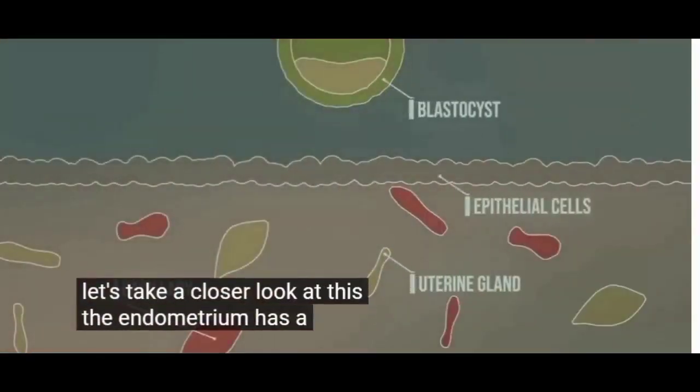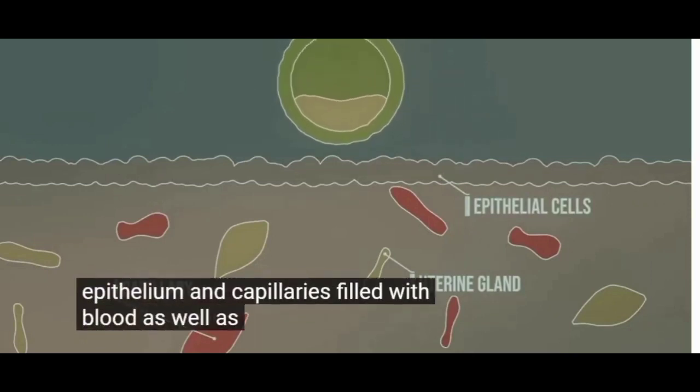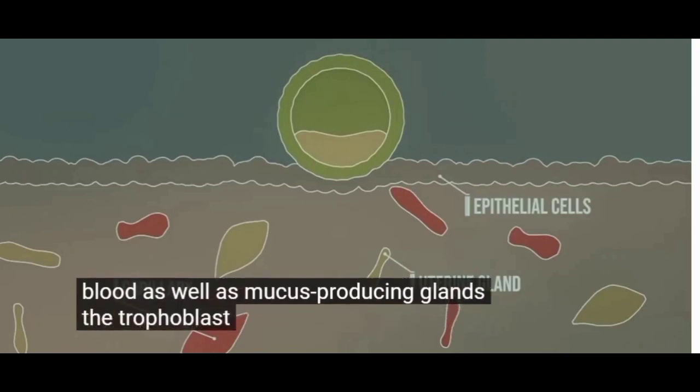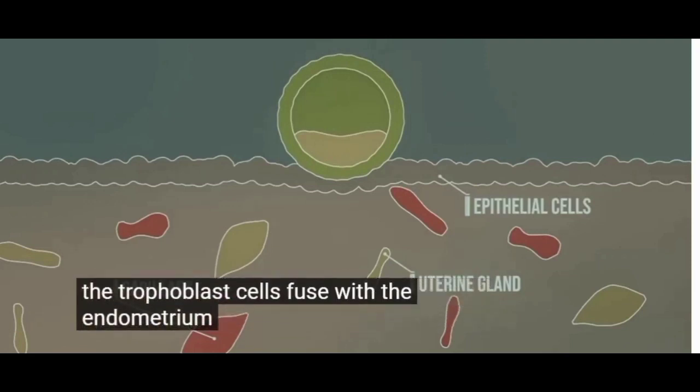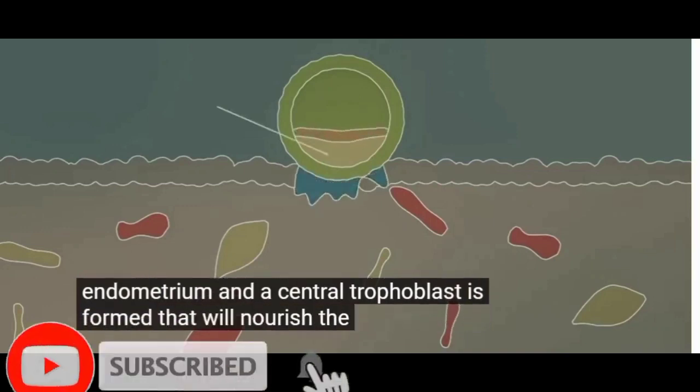The endometrium has a protective epithelium and capillaries filled with blood, as well as mucus-producing glands. The trophoblast cells fuse with the endometrium and a syncytiotrophoblast is formed that will nourish the embryo.